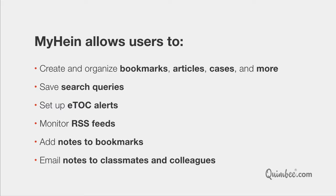After creating your MyHein account, you can also set up electronic table of contents alerts, which are often called ETOC alerts, and rich site summary, popularly known as RSS feeds. ETOC alerts and RSS feeds will notify you by email when new material is added to your selected titles in HeinOnline.